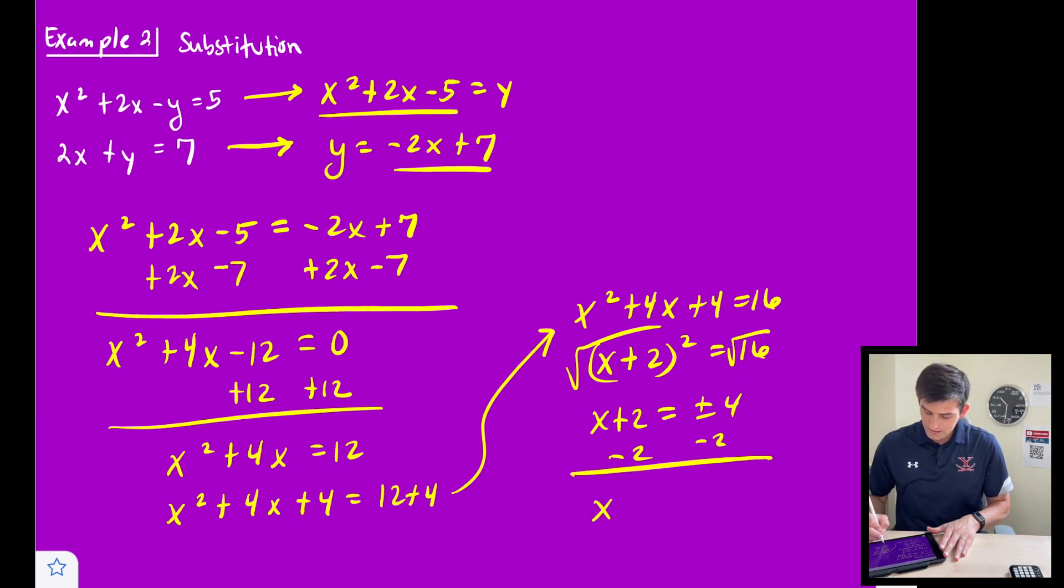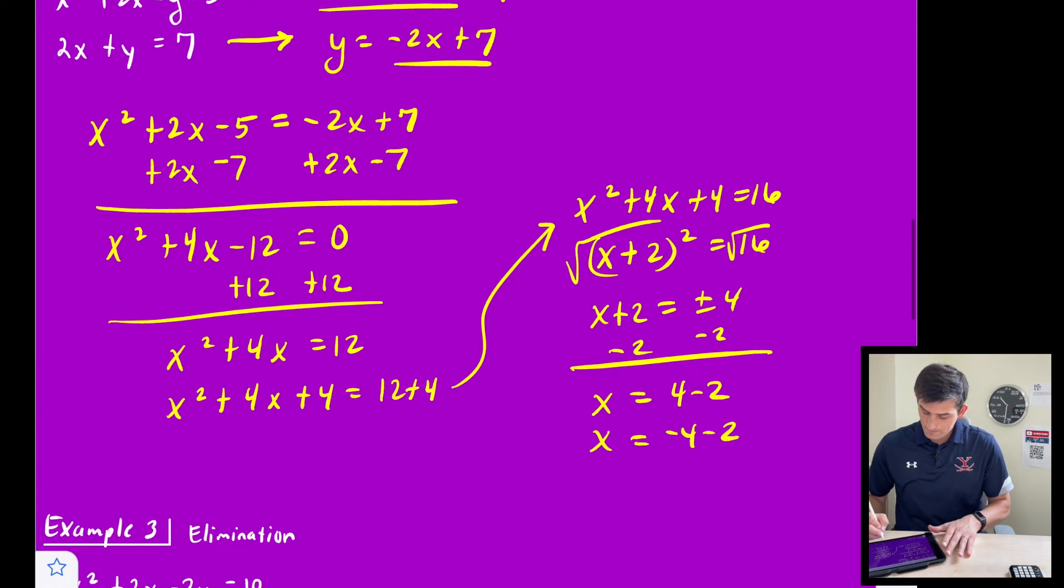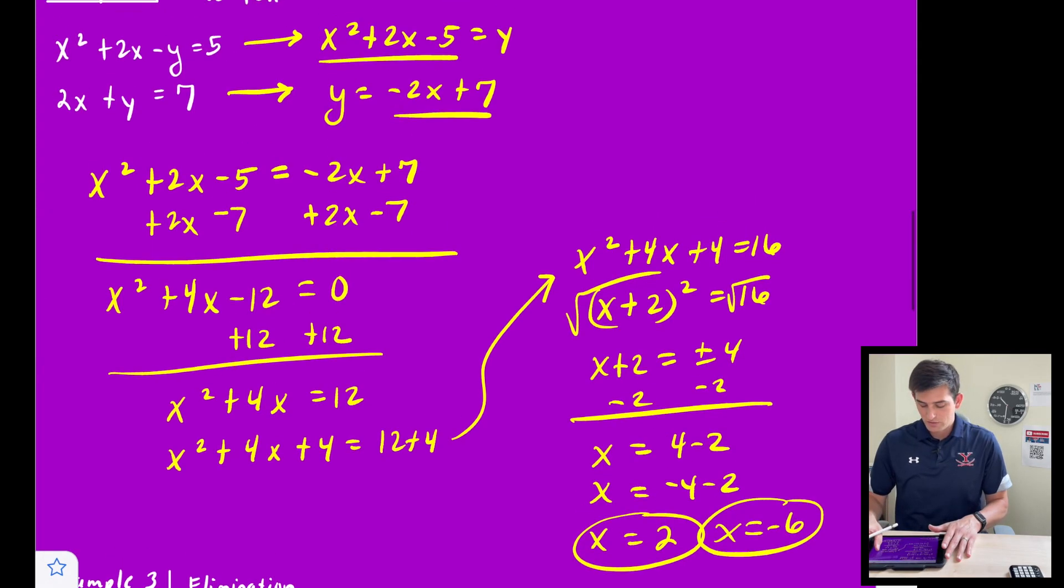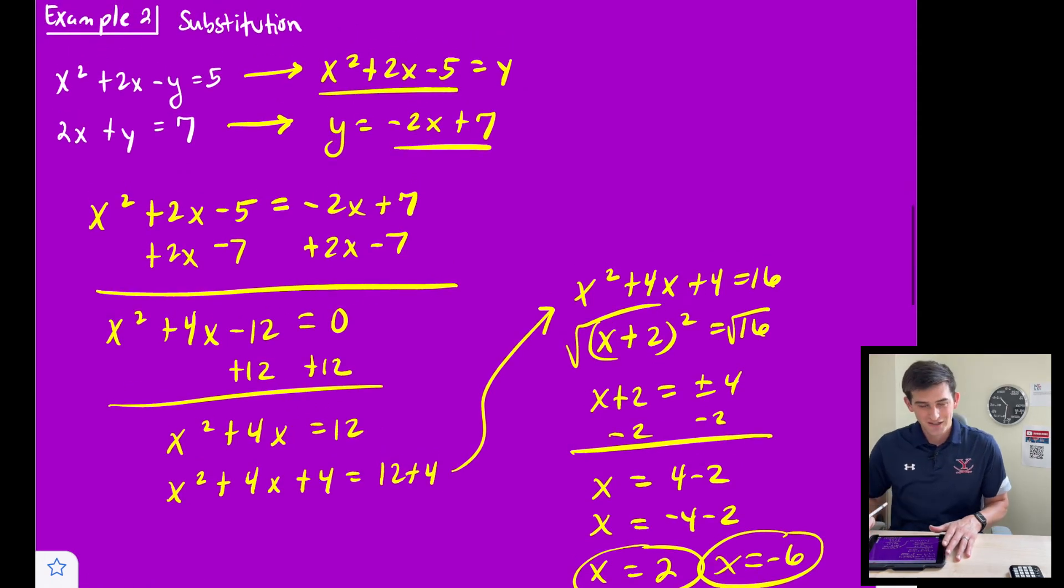Okay. So now we get x = 4 - 2, and -4 - 2. So we're going to get x = 2 and x = -6. Okay. So we did have solutions there. We could have factored it. Couldn't think of that on the spot for whatever reason.